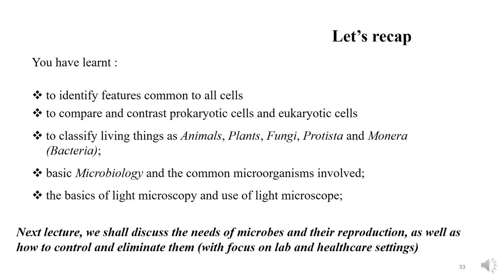In summary, this lecture covered two main types of cells — prokaryotic and eukaryotic — and their common features: the plasma membrane, cytoplasm, DNA, and ribosomes. We looked at classifications including fungi, protista, and monera, examined common microorganisms, and learned the basics of light microscopy. In the next lecture we will look at what microorganisms need to grow and survive, how they reproduce, and how we can control or destroy them.